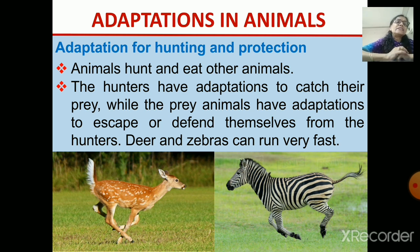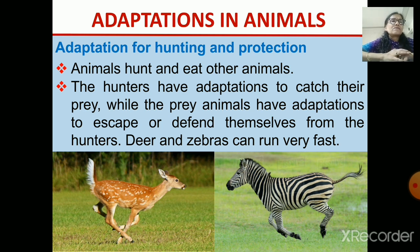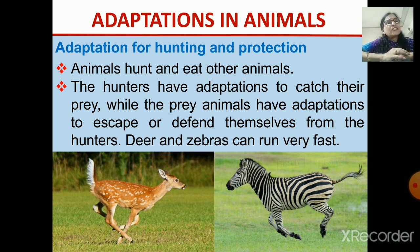Another adaptation is for hunting and protection. The carnivores have to hunt and eat, so they have adaptations to catch their prey. While other animals have to escape, they can run very fast. They have got nice strong legs by which they can run and save themselves from the preying animals. Animals like deer and zebras run very fast when the hunter animals try to catch them.